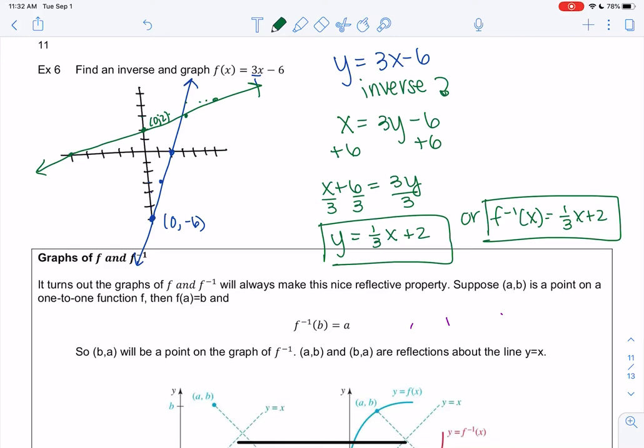We see this nice reflection. If we actually draw the diagonal, which is y = x, you see this nice reflection. This will be true for all inverses, so the graph of f and f⁻¹ will always make this nice reflective property about y = x.